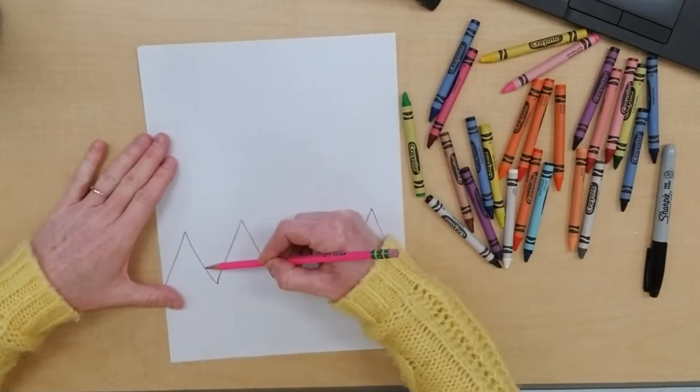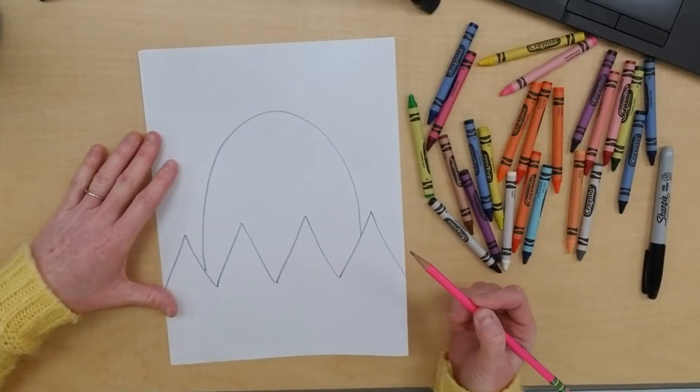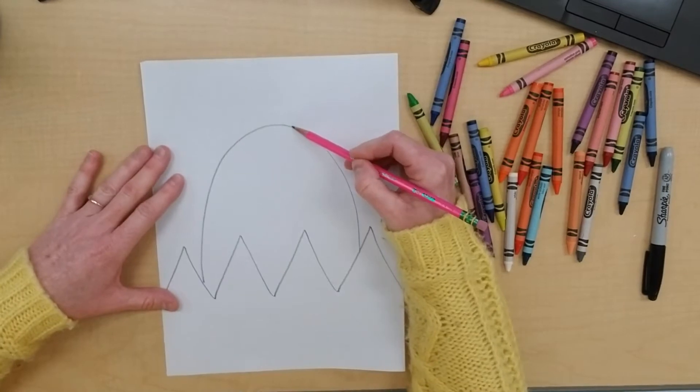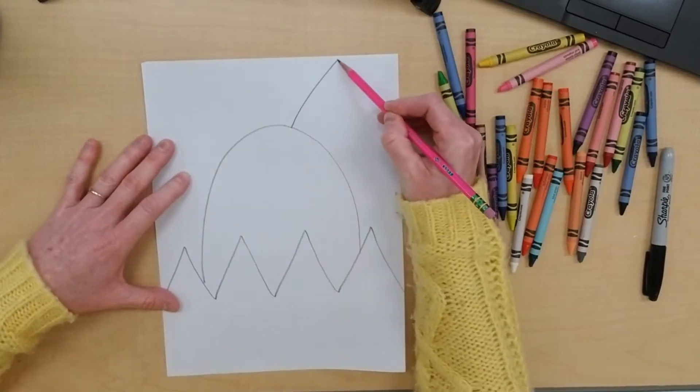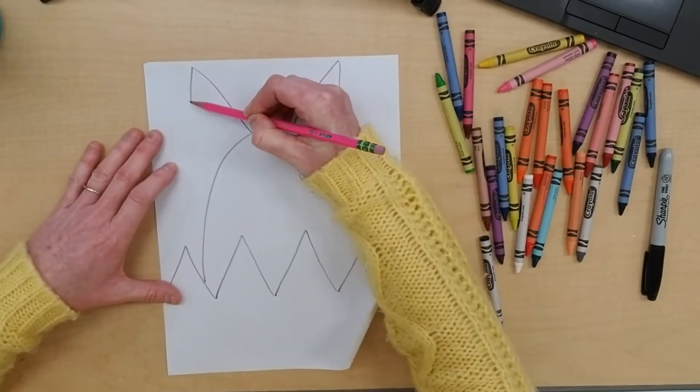add some ears. Zoop, up and over. All right, and then for the ears you can use as much room as you have at the top to do two big triangles, so go up and down and up and down.